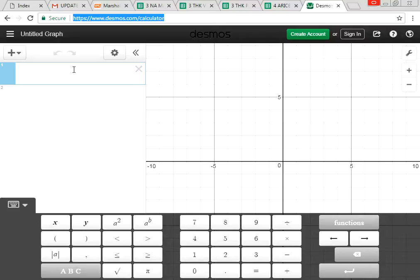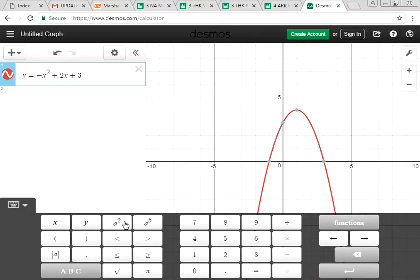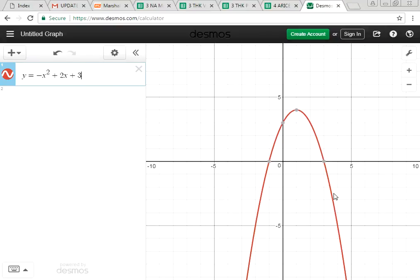They want us to sketch y equals to negative x square plus 2x plus 3. This in red color is the graph that I have. What is the shape of this graph? It is a parabola that opens downwards.